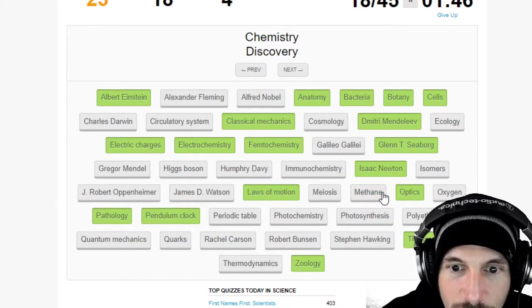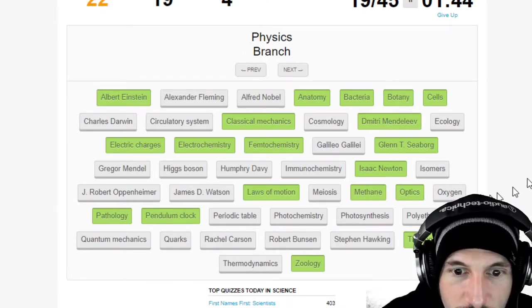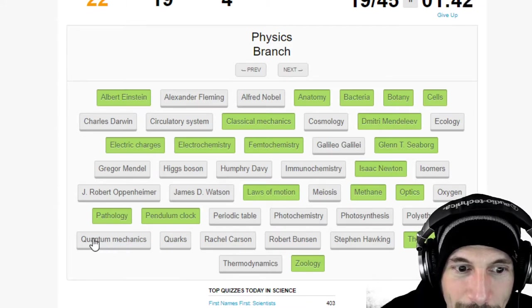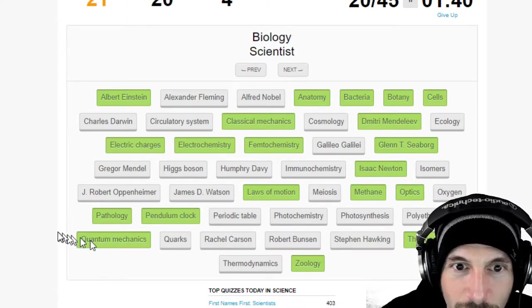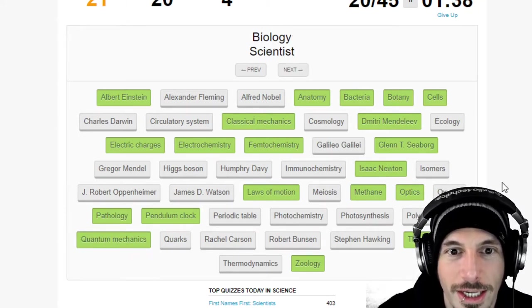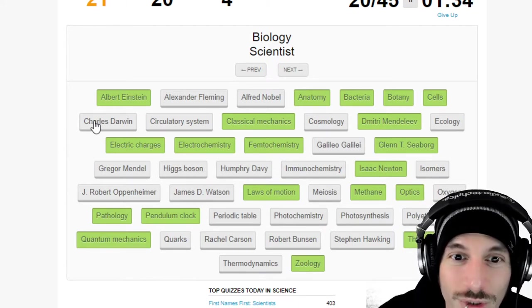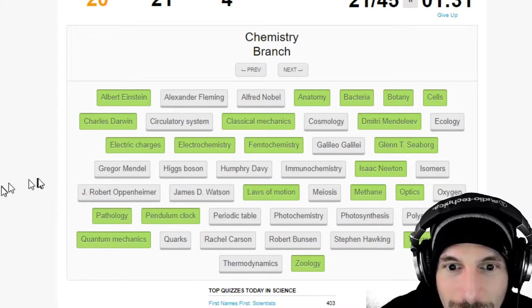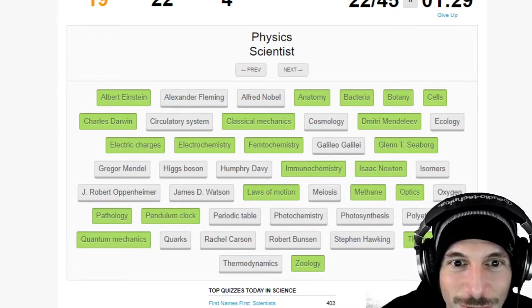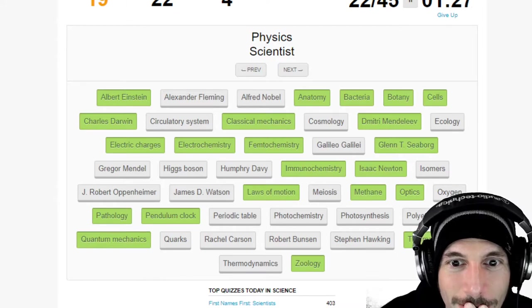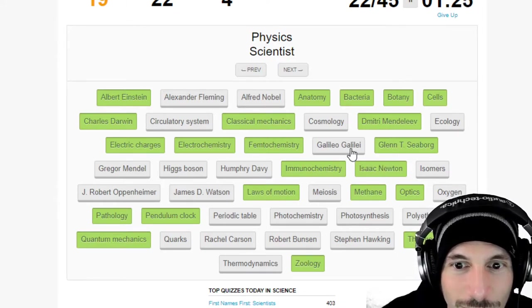Biology, biology, yeah methane? No that was chemistry. Okay chemistry, methane. Physics branch, physics, quantum mechanics, physics. Biology scientist, biology scientist, biology Darwin, Darwin would that be, yeah Darwin. Okay chemistry branch, immunochemistry, easy. Physics scientist, physics, Galileo, would that be physics?